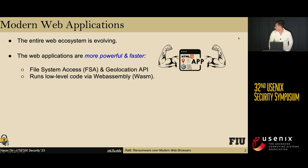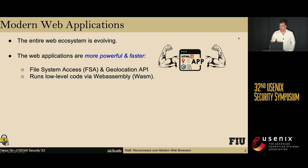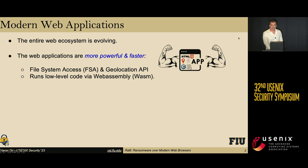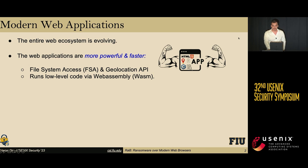For example, now with the modern web APIs, web applications can access the local file system of the user and even locate the user directly from the browser. Furthermore, web applications are no longer limited by the constraints of traditional JavaScript. Thanks to WebAssembly, web applications can now run low-level code in the browser, which makes them faster than ever.